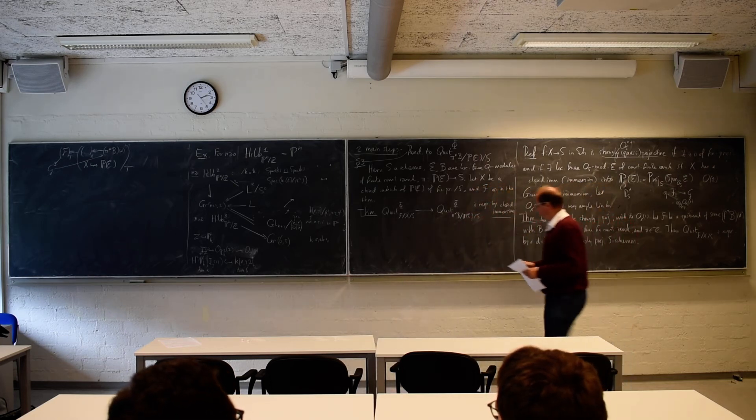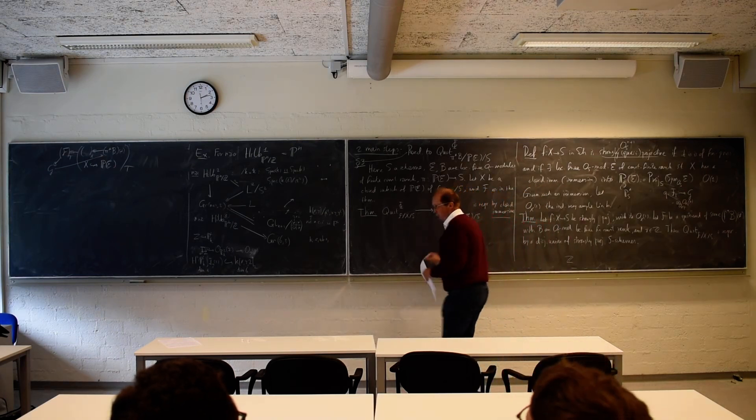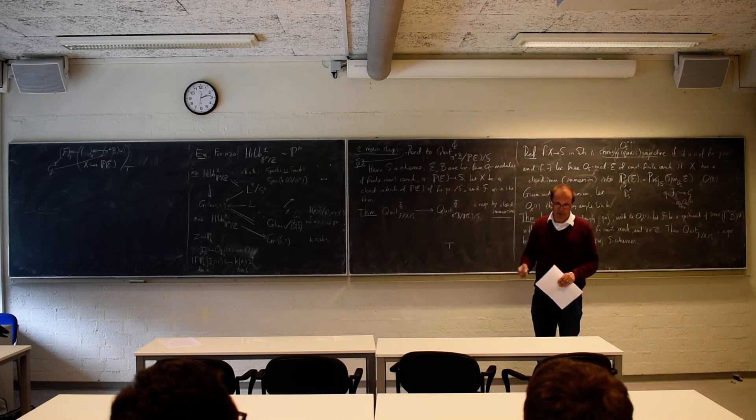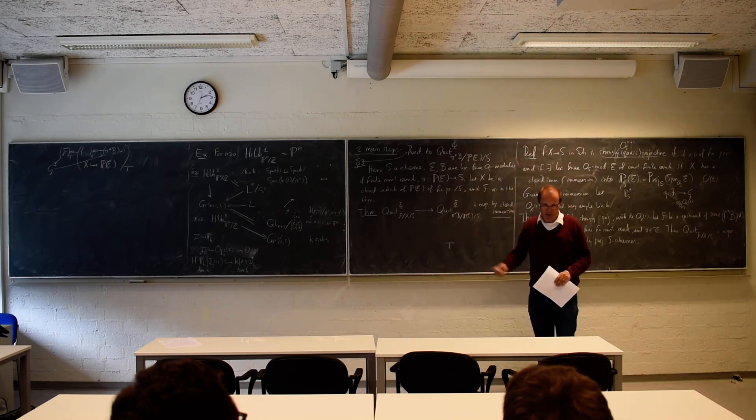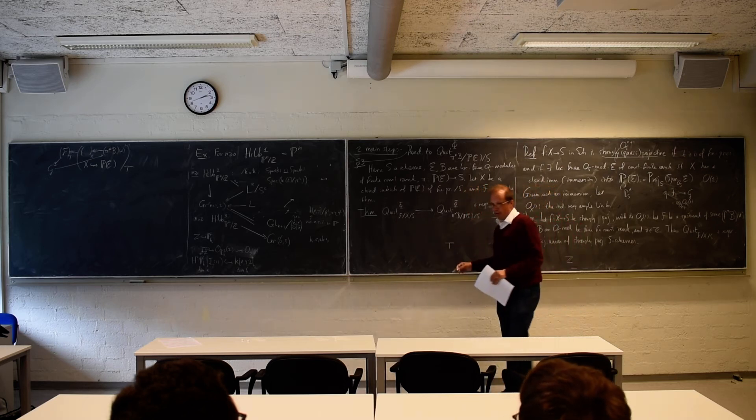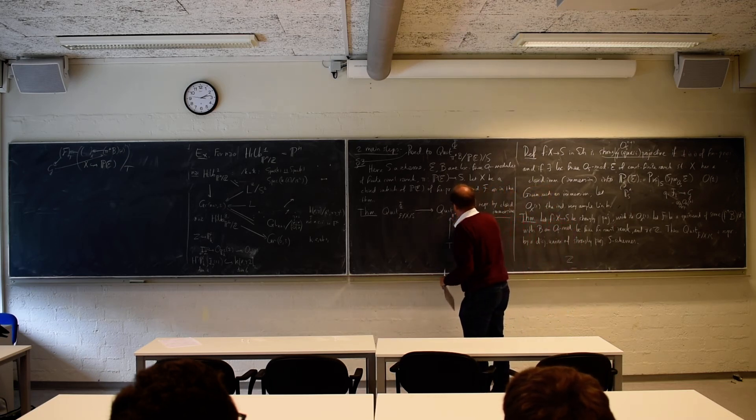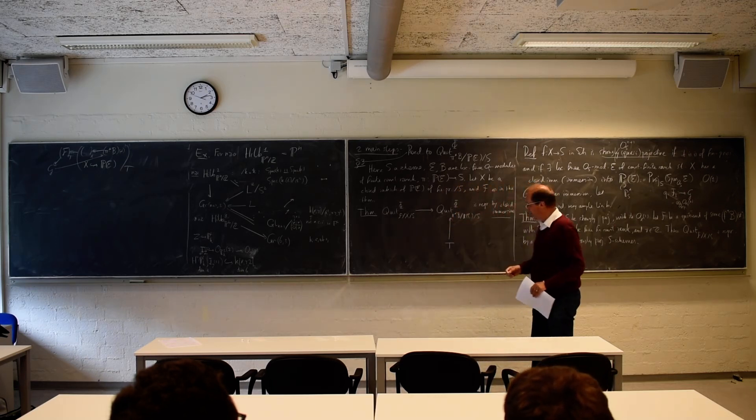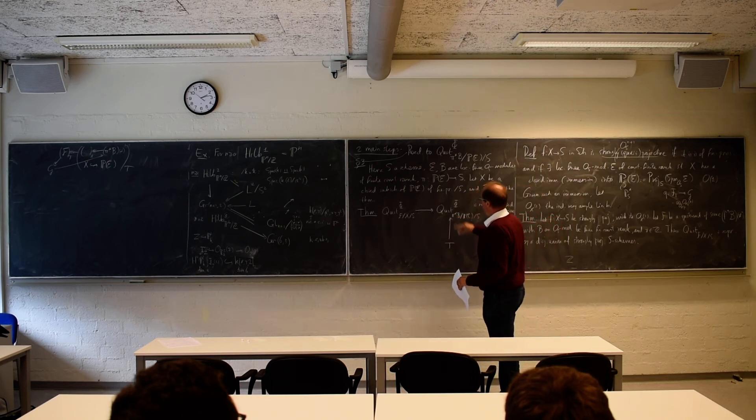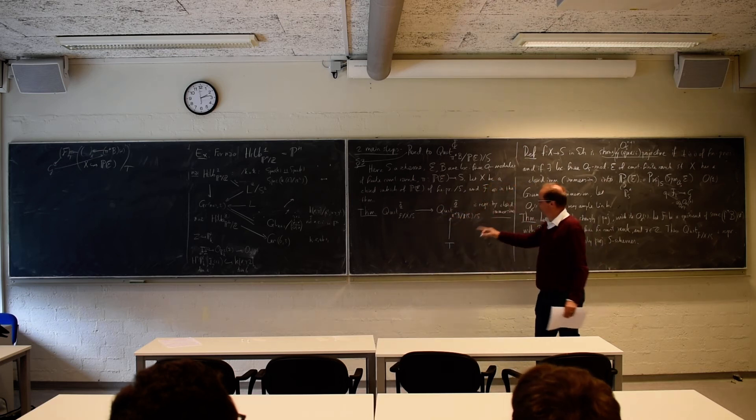And that is, yeah, compatible with pullback. So... And the claim is that this... This is a morphism of functors, right? I'm trying to prove that they are schemes, but they are functors. So here, this is... The theorem says this is represented by closed immersions. And what does that mean? So I promised to say a little bit about that.